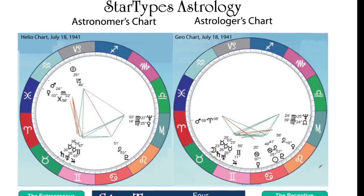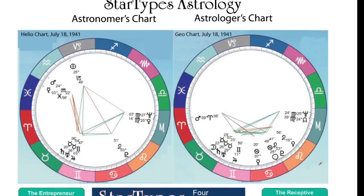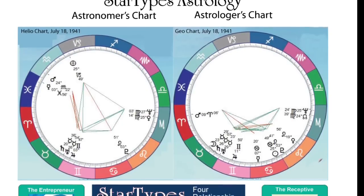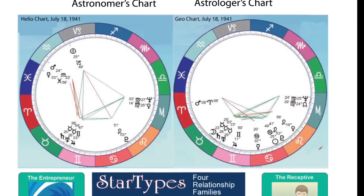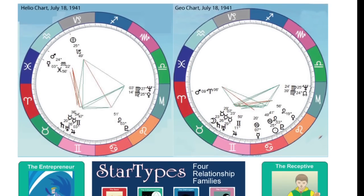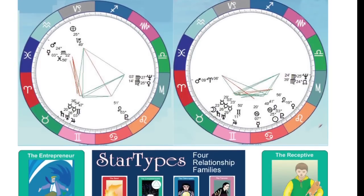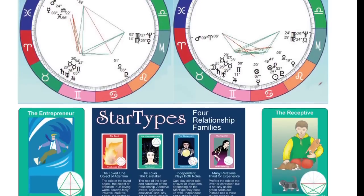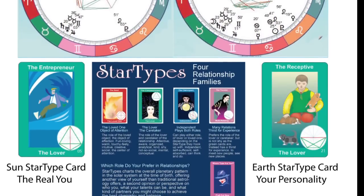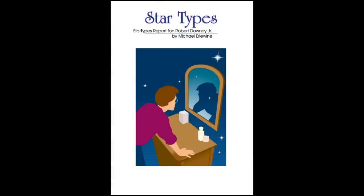I have lectured, taught classes, and done private consultations for more years than I want to think about. What I've found works best is a one-to-one presentation of your personal astrology chart. In these Star Type reports, I've tried to do just that — to walk you through what is most important about your astrology chart, step-by-step, just as I would if we sat down together for a chart reading. If you're interested in finding out more, you can go to astrologyland.com, or the specific report I'm talking about here is called Star Types Astrology, and it's at the URL I'm posting here.